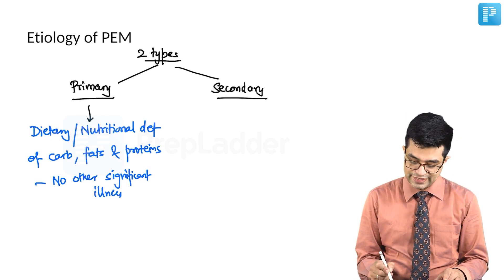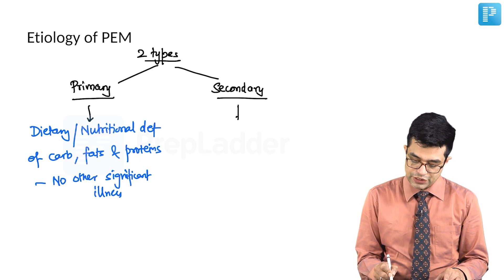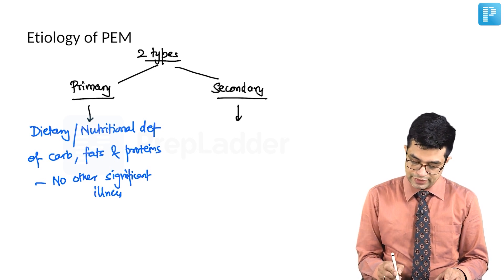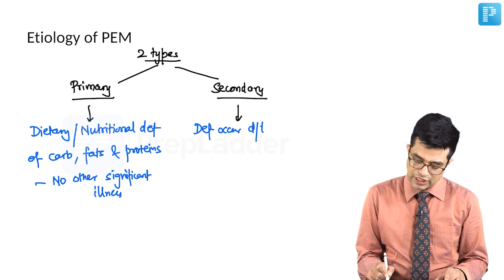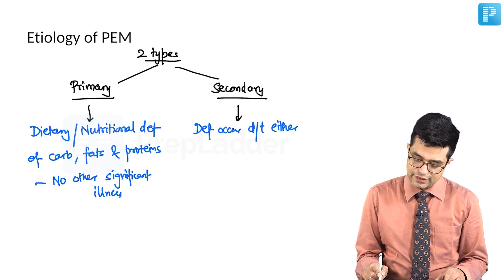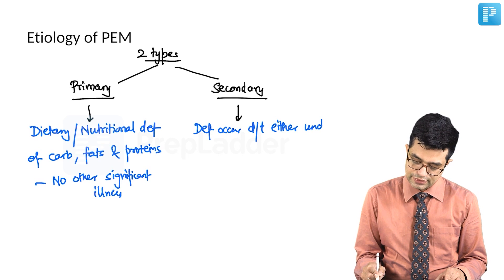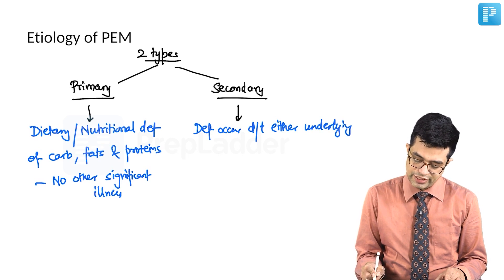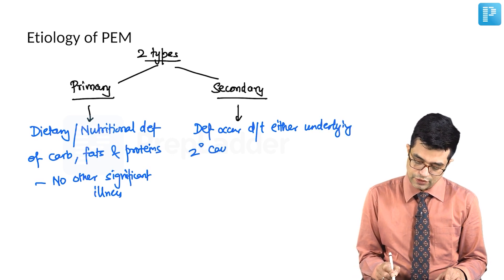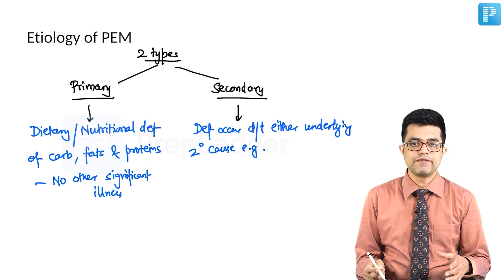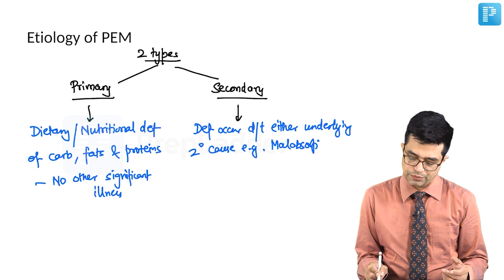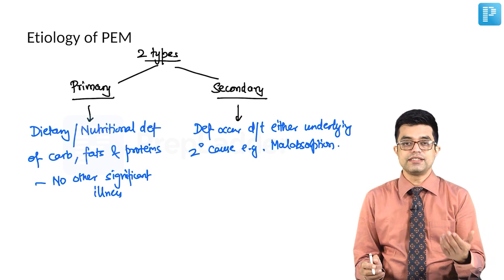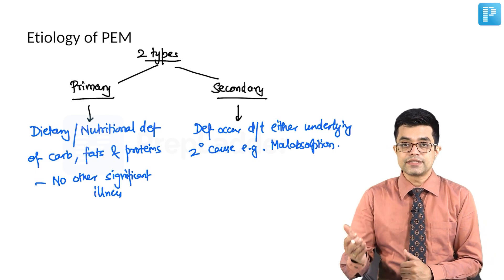The second form is the secondary malnutrition in which the deficiencies occur due to an underlying secondary reason. For example, the patient is having malabsorption. There is celiac disease in the patient. Because of long-standing celiac disease, undetected celiac disease, cystic fibrosis.